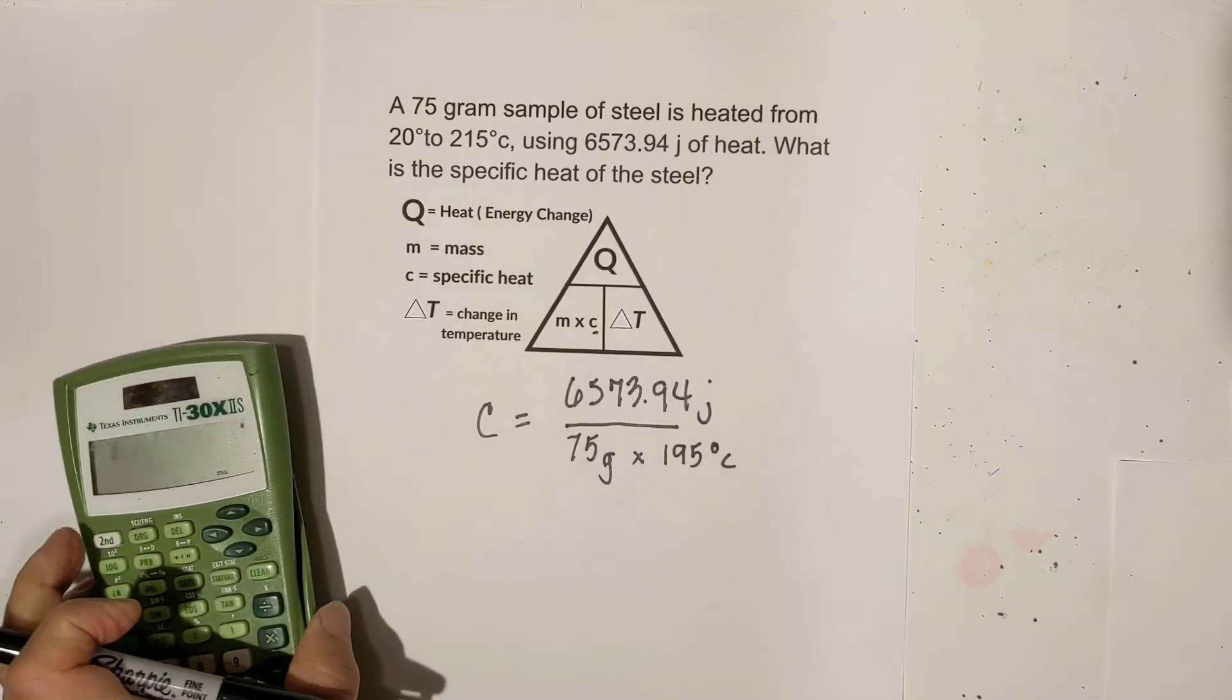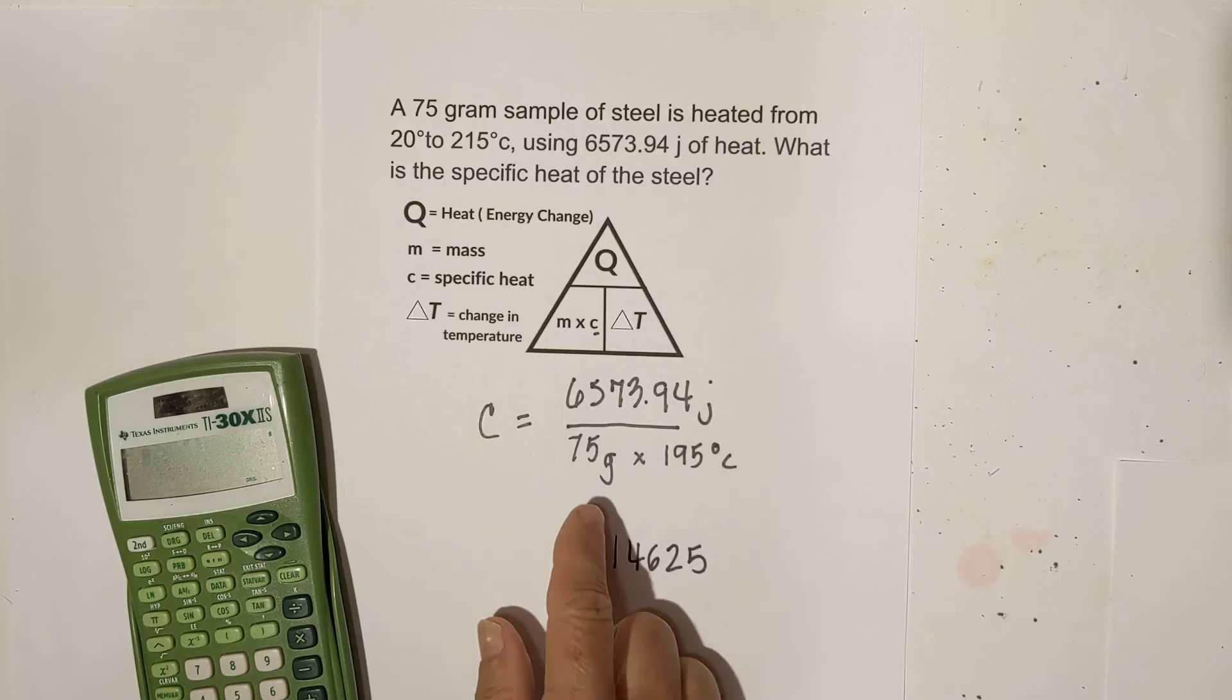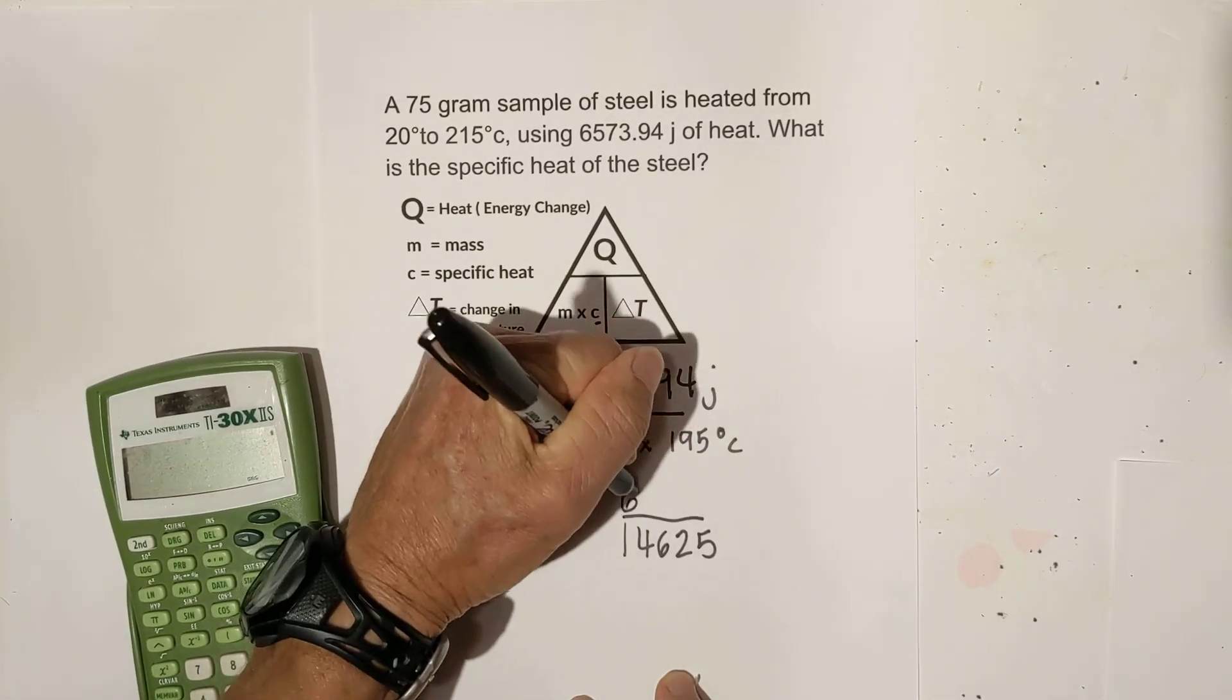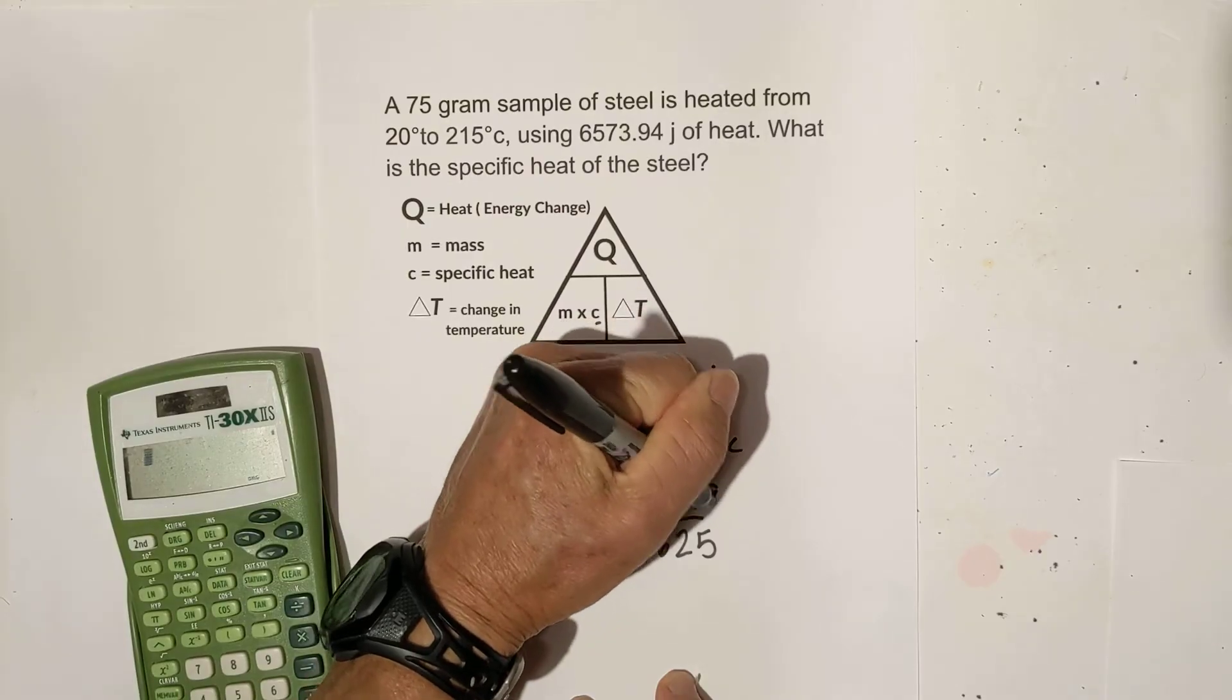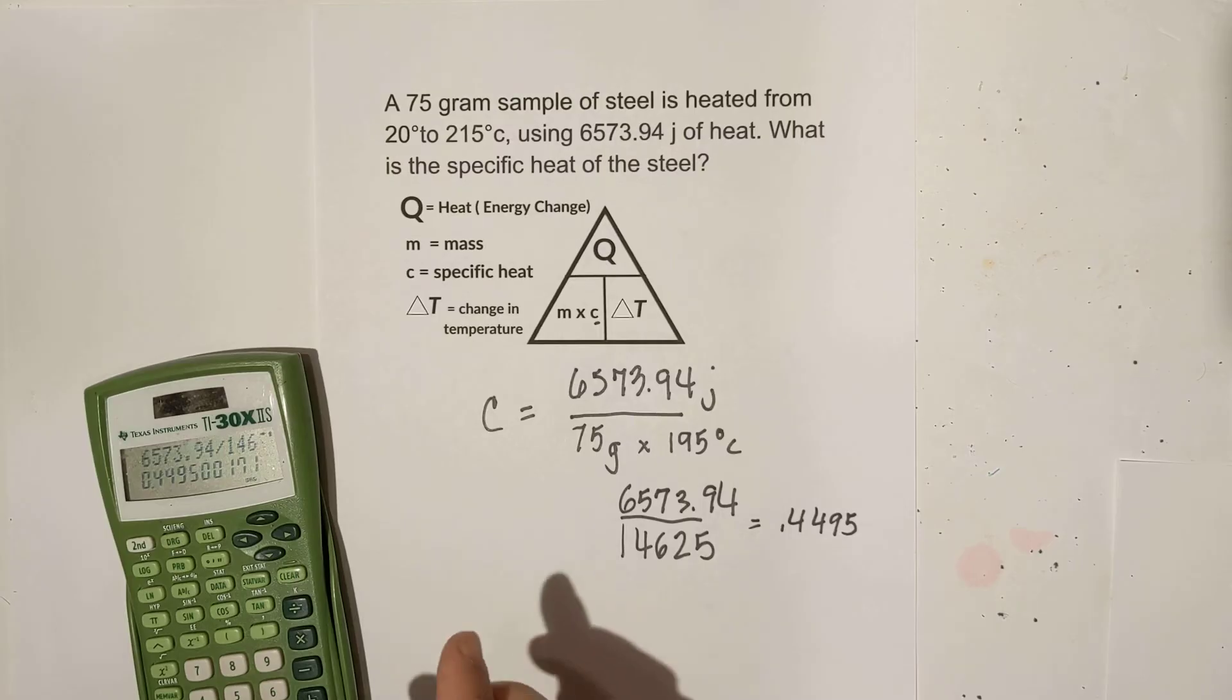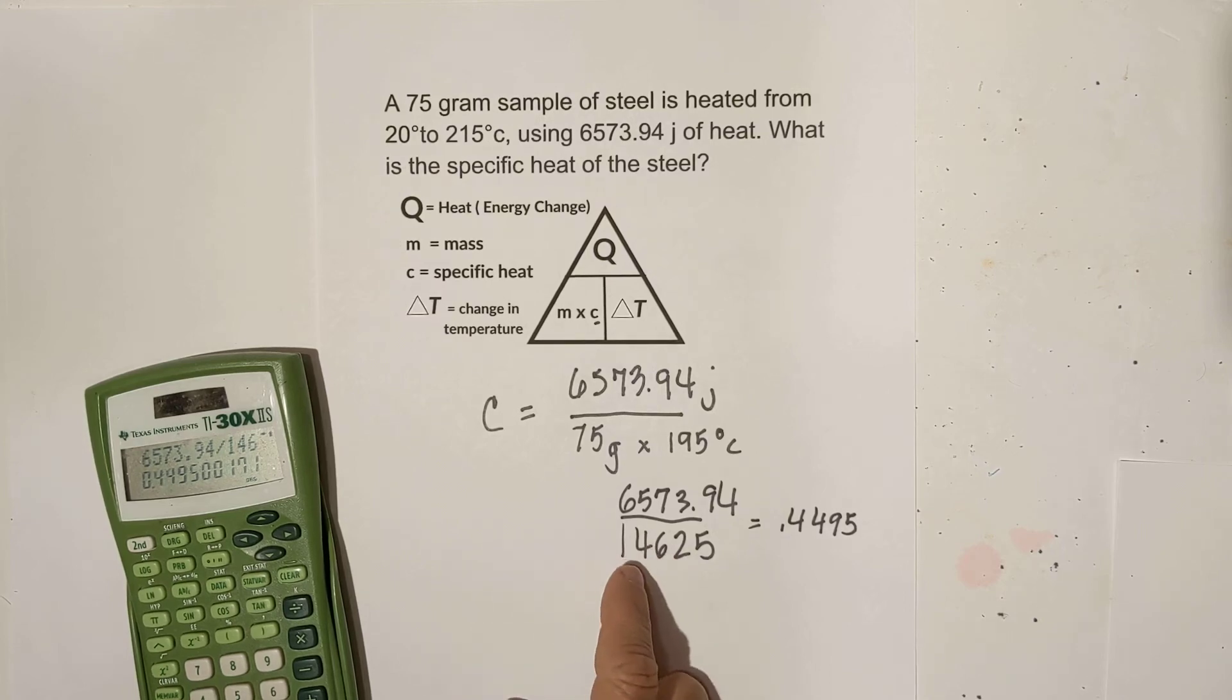So now all we do is once again, let's just do the math and then we'll cancel units. When I multiply 75 times 195, it's 14,625. I'm going to take Q and divide that by that number. And then we'll worry about the units in just a second. And when you divide 6,573.94 by 14,625, you get this. Let's see what the unit is.